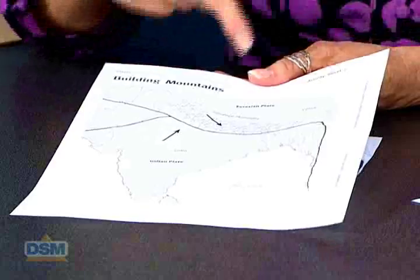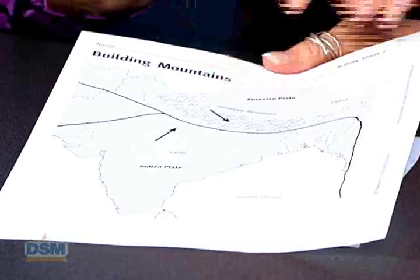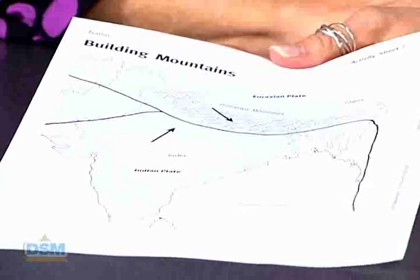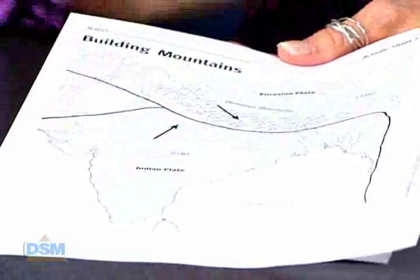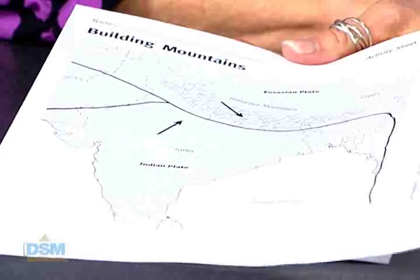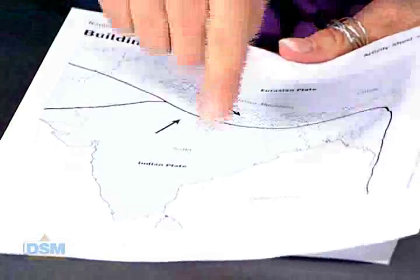Ask the students: what do you think might happen when two continental plates collide? Kathy, what are the names of the two plates on this Activity Sheet? We have the Eurasian plate and the Indian plate. What continent is located on the Eurasian plate? Europe and Asia. What part of the Asian continent is located on the Indian plate? India. What major geographic feature is on the Indian plate? We have the Indian Ocean.